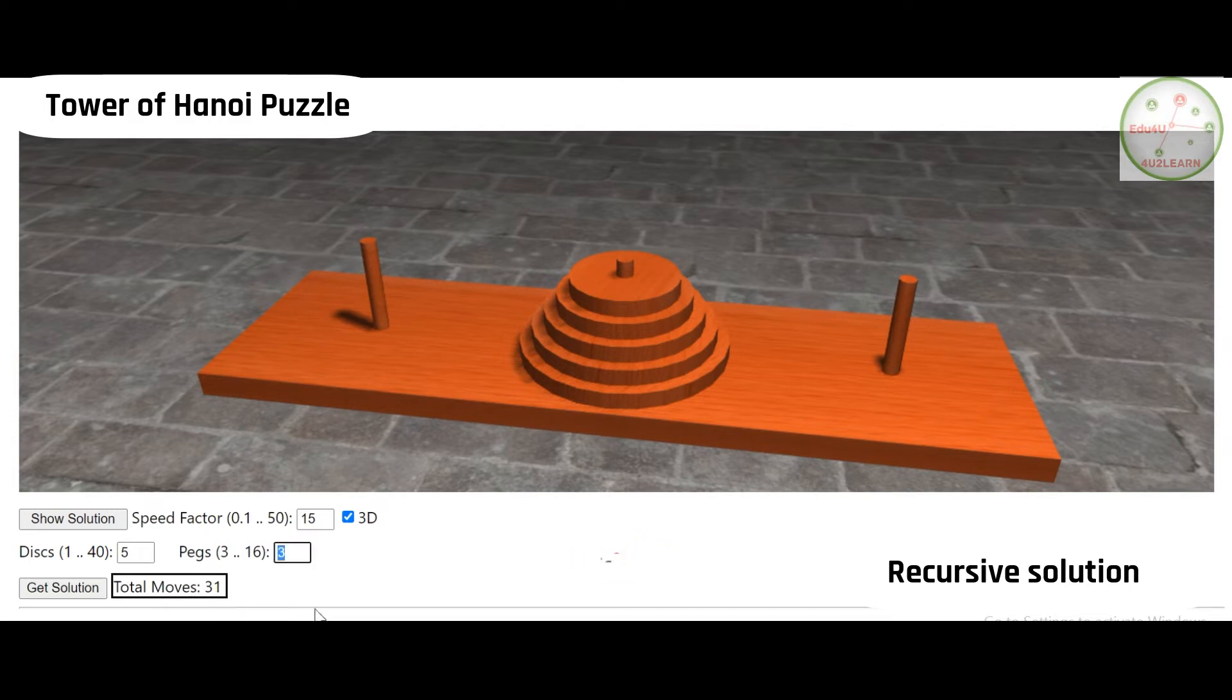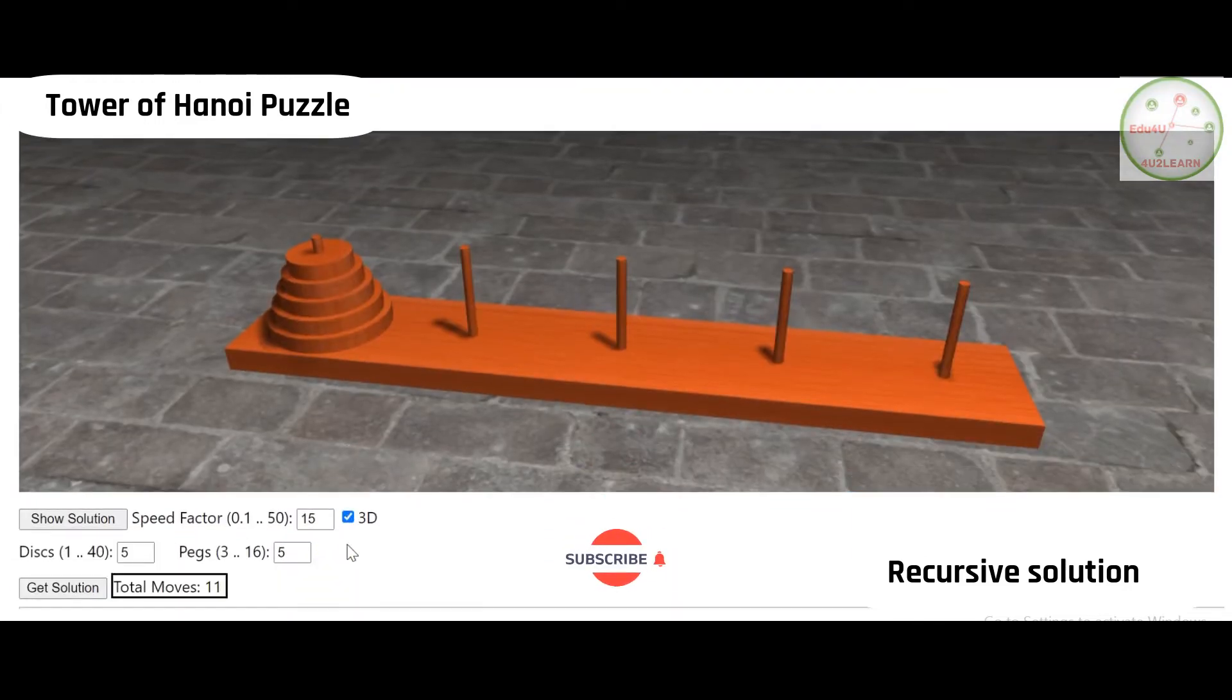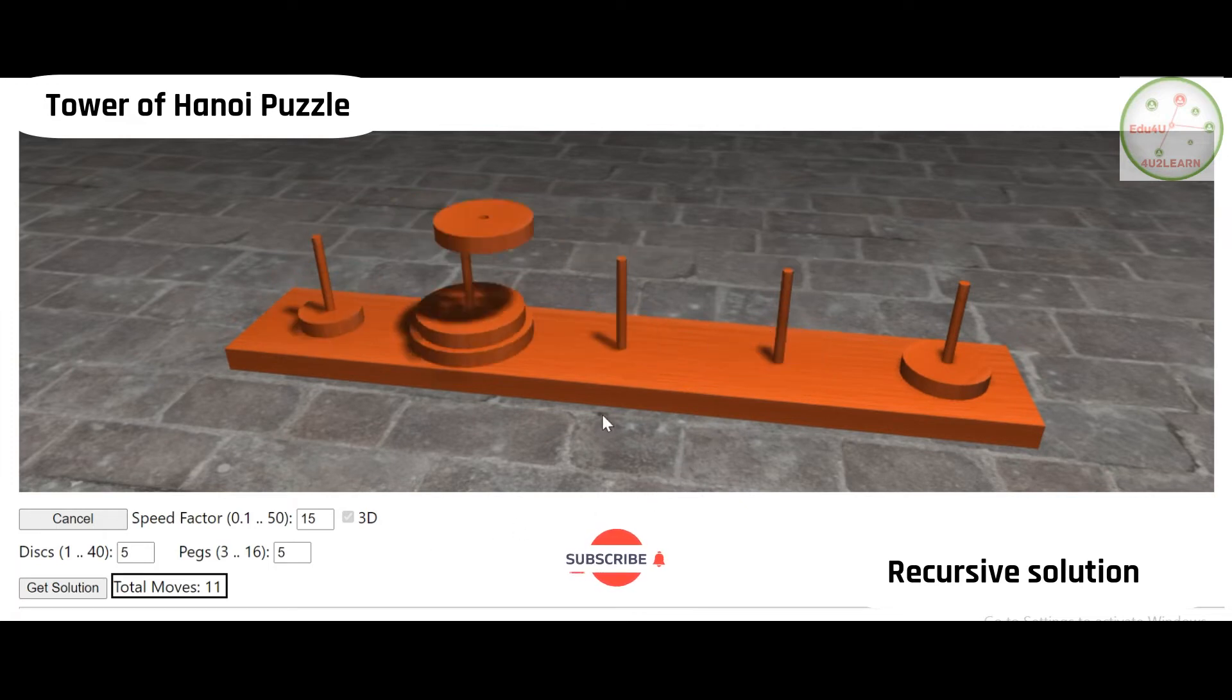So now if there are going to be five pegs or stands altogether, the area is being widespread, so getting the solution requires a limited number of moves, that is we have only 11 moves. Our normal problem is always focused with three stands or three pegs.